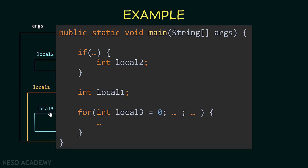As you can see, local3 can only be used inside the for loop. A smaller block can access a bigger block — in other words, the block of the for loop can access the variable local1, accessing the block of the main method. Also, a bigger block cannot access a smaller block. The block of the main method cannot access the variable declared inside the if statement block, and it also cannot access the variable local3 inside the for loop. So a bigger block cannot access a smaller block, but a smaller block can access a bigger block.